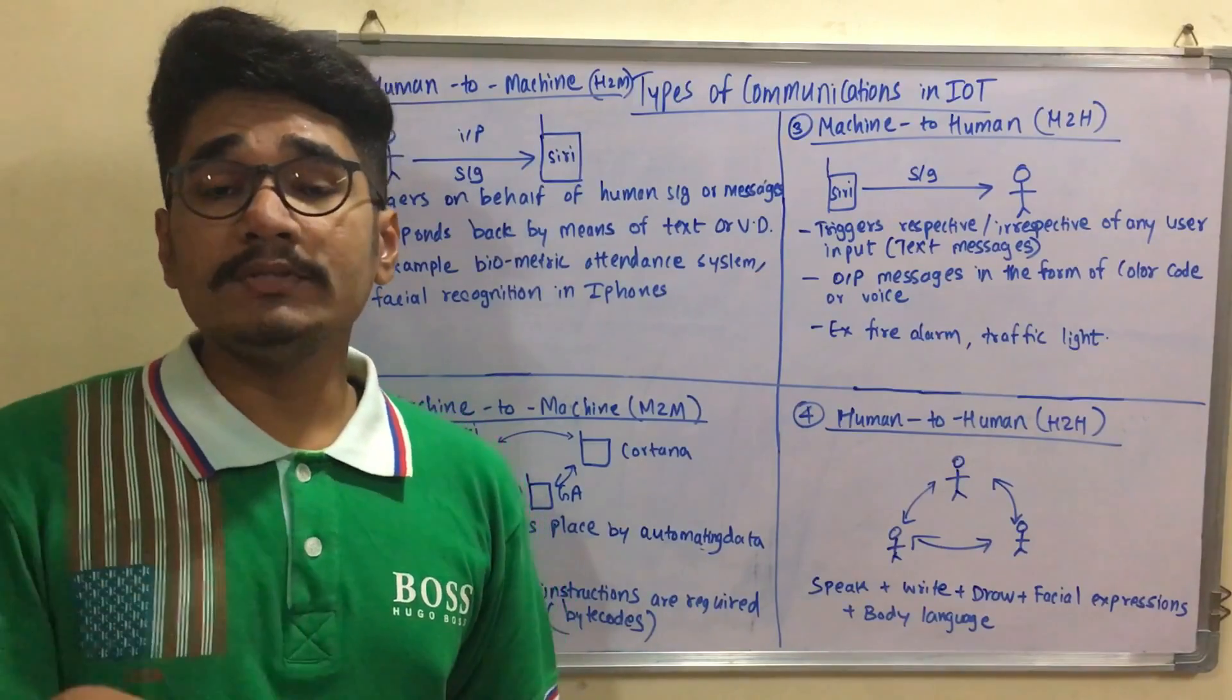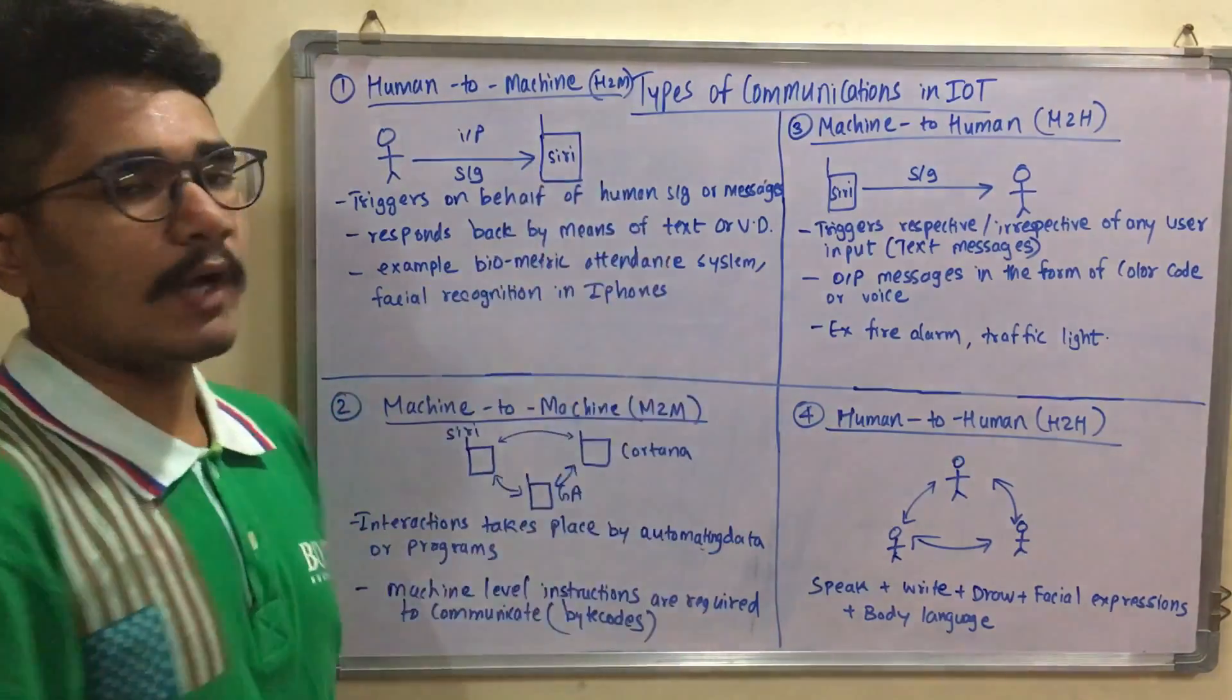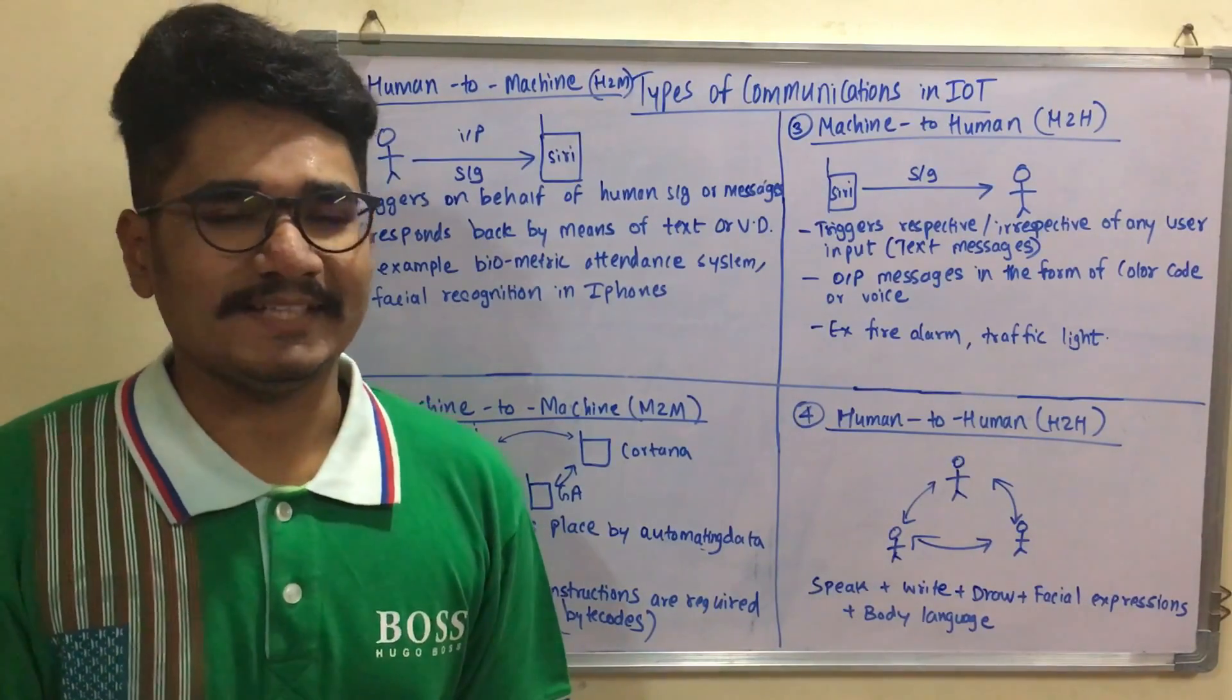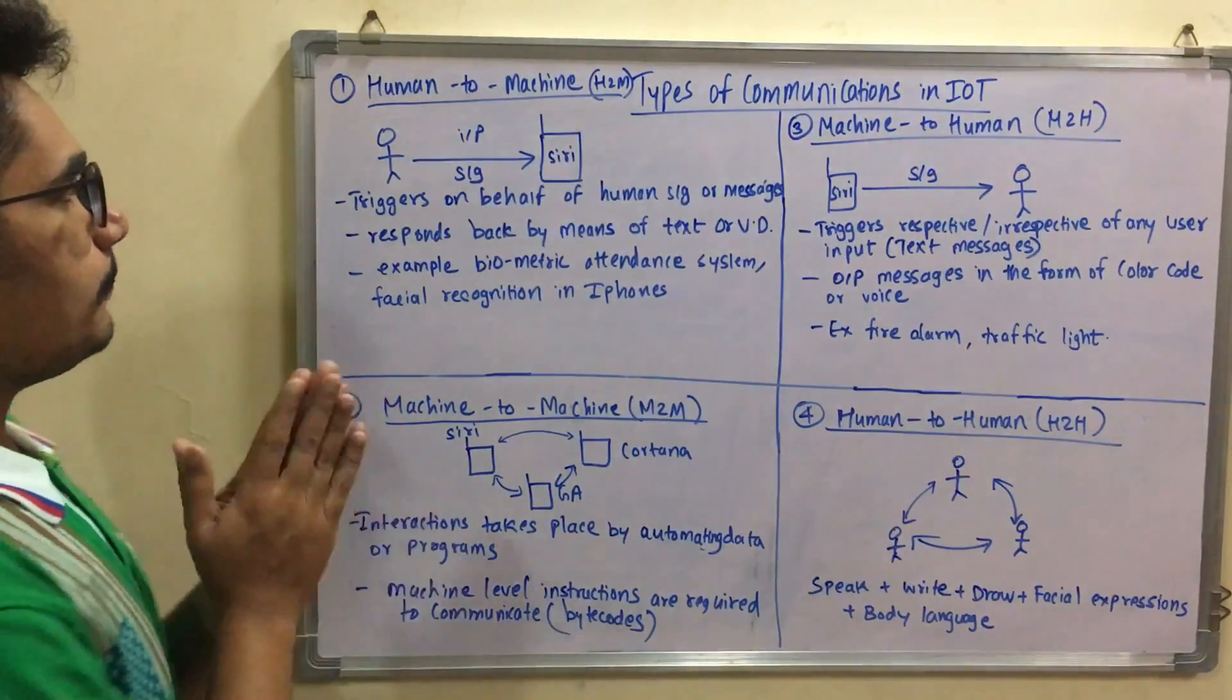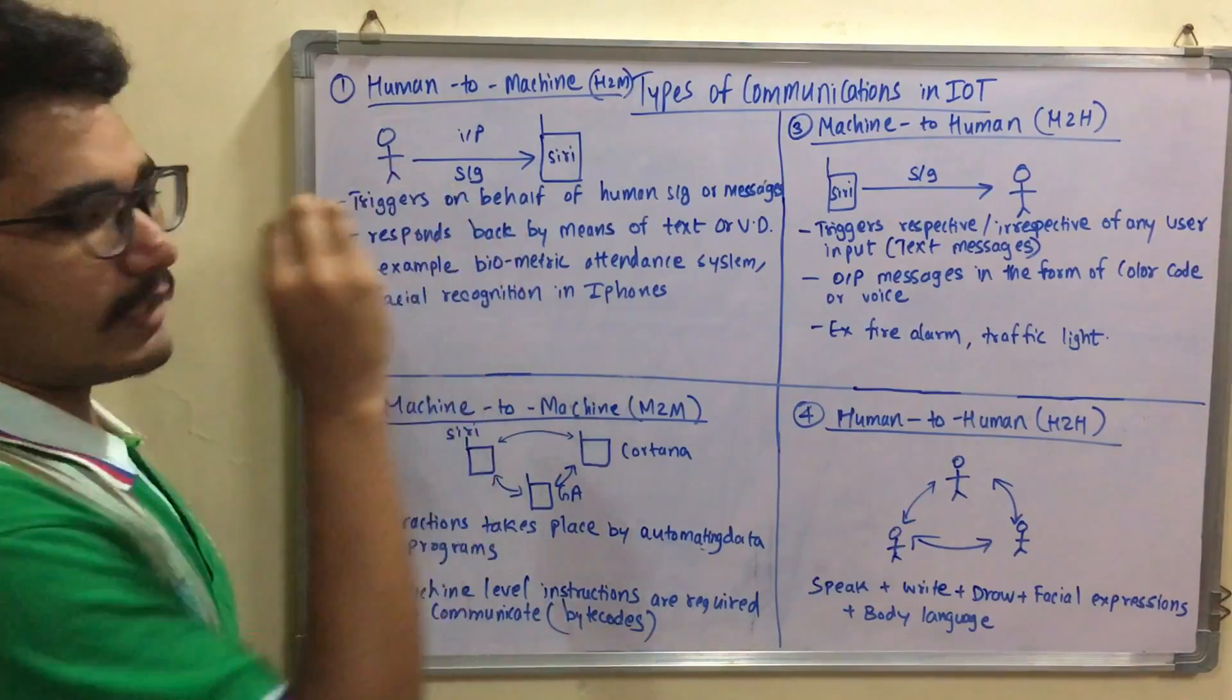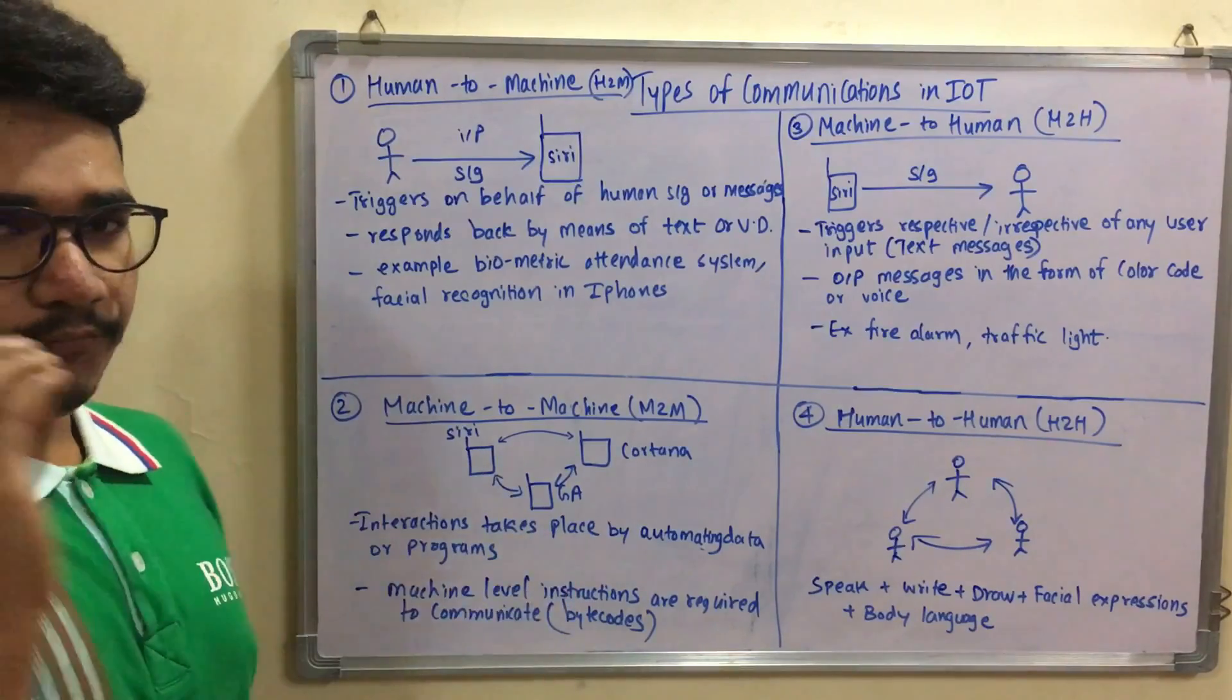Now let's understand how devices communicate with each other and what mechanisms they use. Today's video is based on types of communications in IoT. This is the third video for IoT, my name is Ranjiraj and you're streaming on The Study Beast. First, I'll give a simple example - we have a Siri device, an iPhone with an inbuilt assistant Siri, and a human being to interact with.